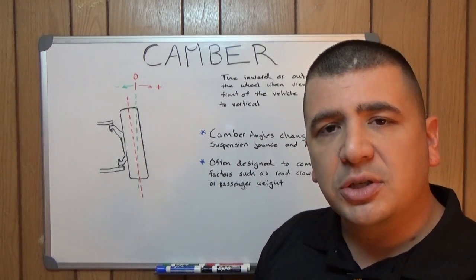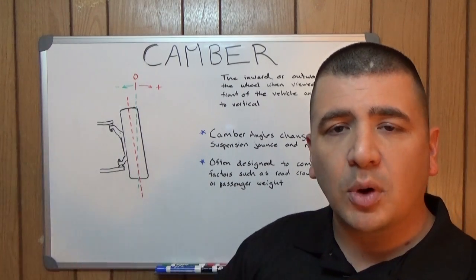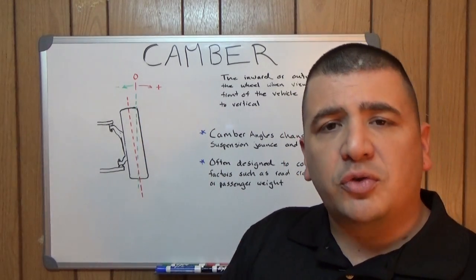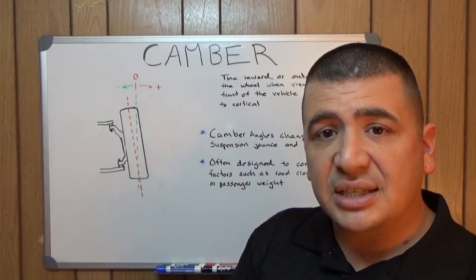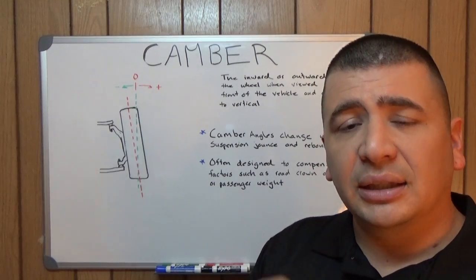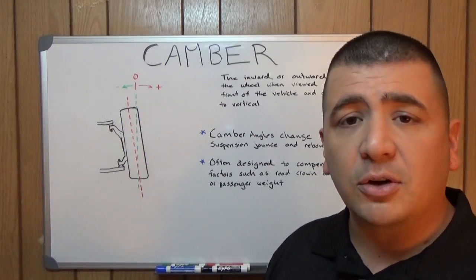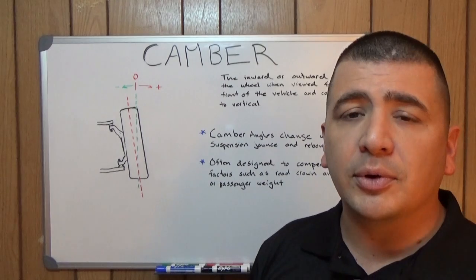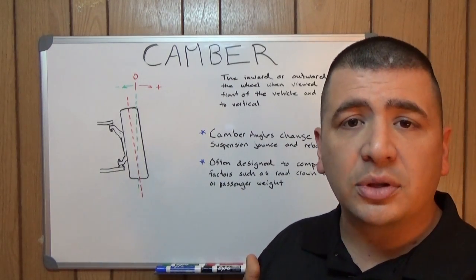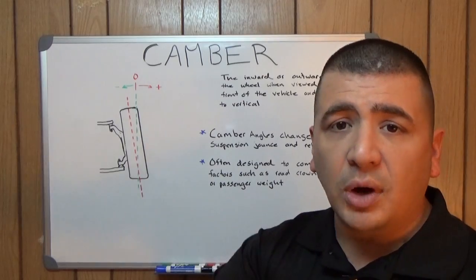Jounce and rebound simply means a compression and extension of the suspension. As you drive down the road and the suspension moves up and down to deal with the road surface and bumps and dips and potholes and everything, you're going to see camber changes. It's going to constantly be changing. But most always it's going to sit right where it's been engineered to sit. And it's usually very close to zero or at zero.